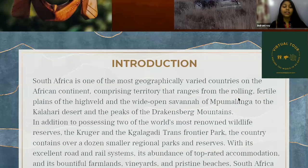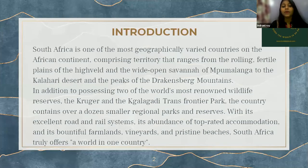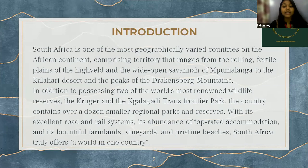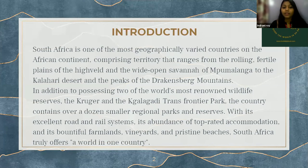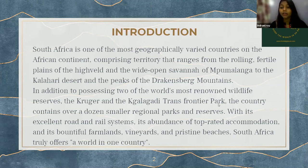Here is an introduction about this country. South Africa is one of the most geographically varied countries on the African continent, comprising territory that ranges from the rolling fertile plains of high dirt and the wide open savannah of Mpumalanga to the Kalahari Desert and the peaks of the Drakensberg Mountains. South Africa is very famous for its mountains and renowned for its wildlife reserves. The two of the world's most renowned wildlife reserves in South Africa are Kruger and Kgalagadi Transfrontier Park. The country contains over a dozen smaller regional parks and reserves with its excellent road and rail system.